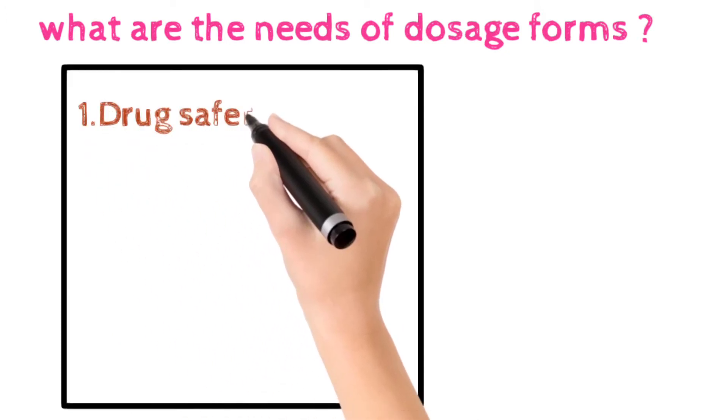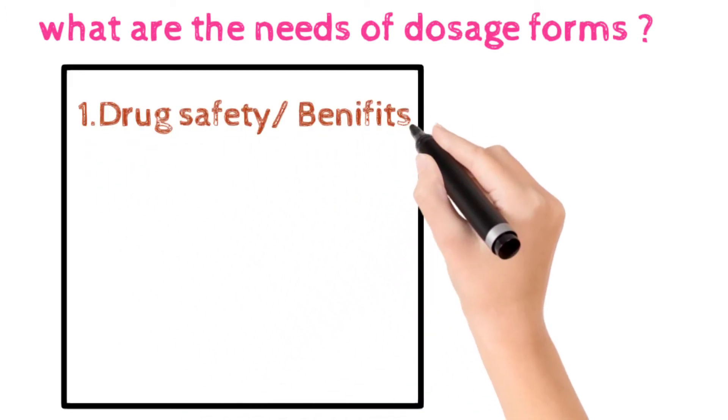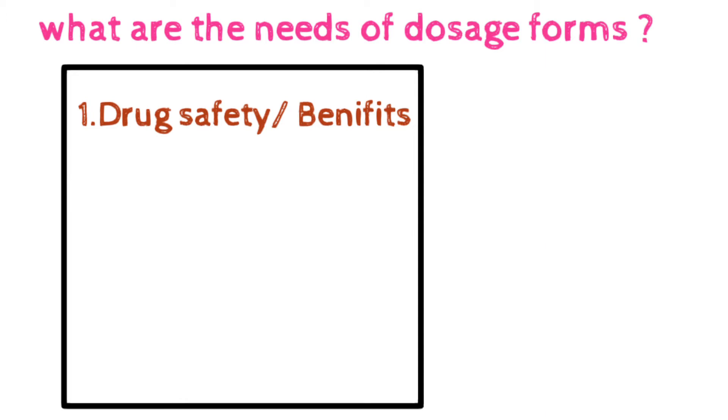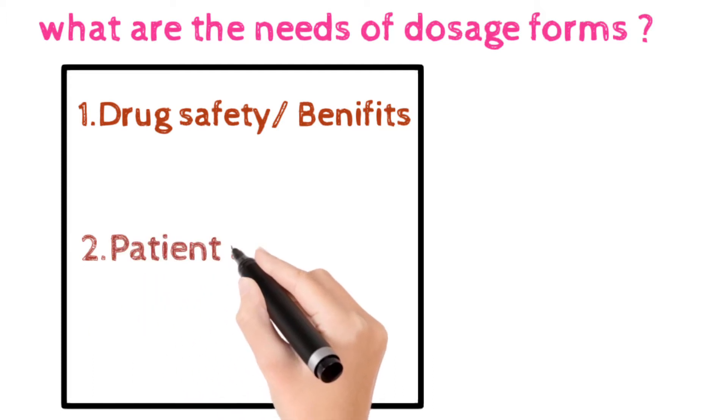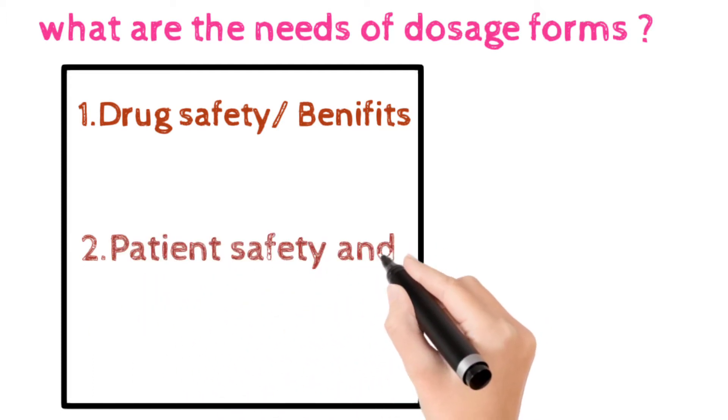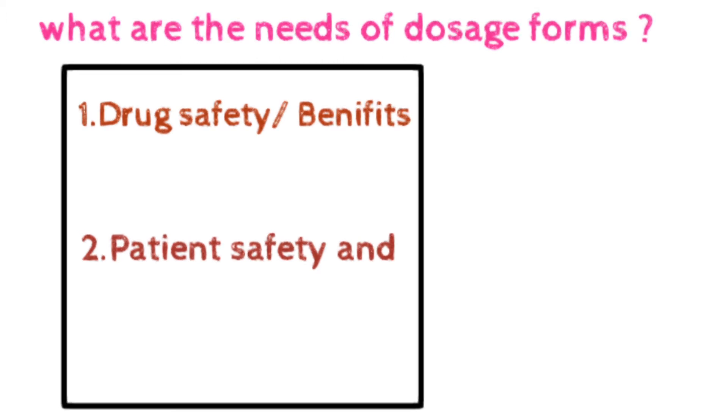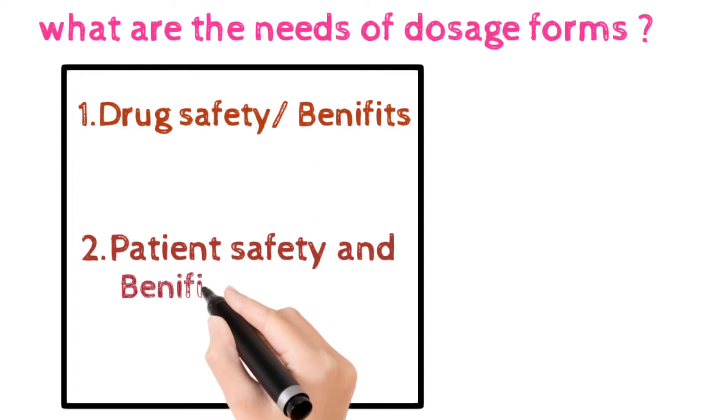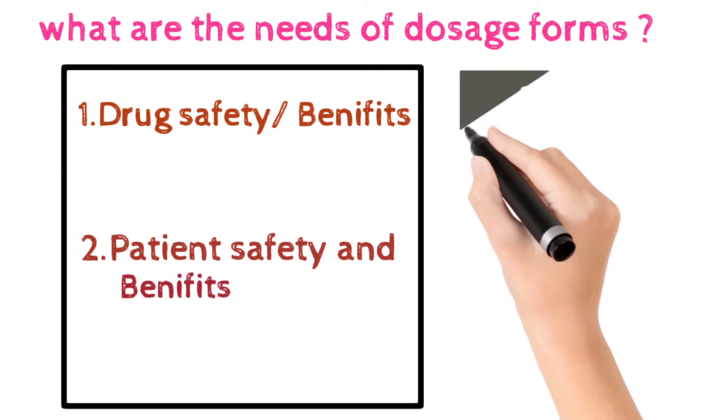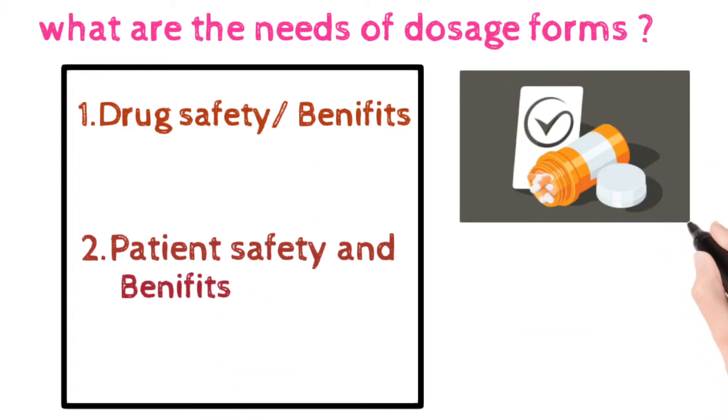It is most important. If the drug is not safe after forming a Dosage Form, then this Dosage Form is not of our use. Therefore, the drug safety should be maintained while preparing any Dosage Form. Second one is patient safety. Drug should be safe for the patient administration. If the drug is showing any harmful effect, then it should not be of use.